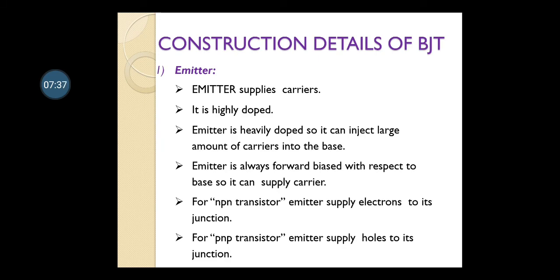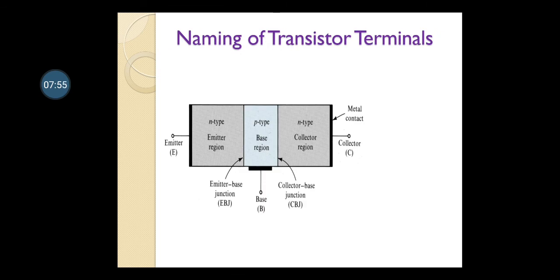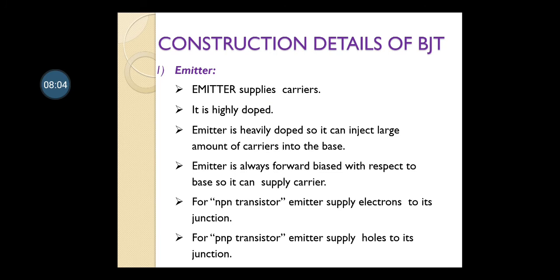Now the construction details of BJT. For the NPN transistor, the emitter region supplies carriers — it supplies the maximum carriers for current conduction. The emitter is heavily doped so that it can inject a large amount of carriers into the base. Emitter is always forward biased with respect to base so it can supply carriers. For NPN transistor, emitter supplies electrons to its junction; for PNP transistor, emitter supplies holes to its junction.